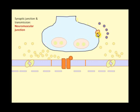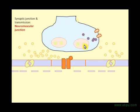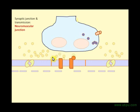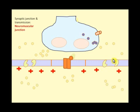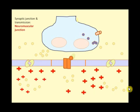Reviewing the animation again: the action potential arrives and the calcium gates open. Calcium ions move in, acetylcholine is released and goes to its receptors, the gates open, sodium ions enter and change the local potential, which causes the voltage-gated channels to open and sodium rushes in, generating the action potential.